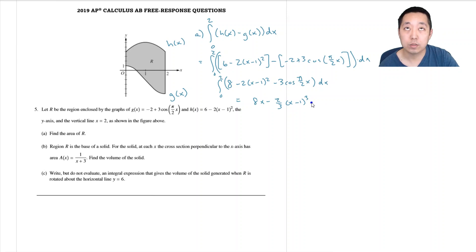And then minus, let's see, derivative of sine is positive cosine, so it's minus 3 divided by pi over 2 sine of pi over 2x, evaluated from 0 to 2.